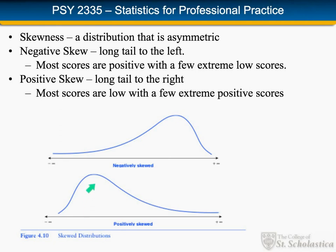A positive skew is the opposite: most scores are at the lower range with a small number of high positive scores. A negative skew is what happens when a professor gives an exam that's too easy — almost everybody gets a high score and only a very small number get a low score. Conversely, a positive skew occurs when an exam is much harder than expected, so most of the class gets a low score except for a small number with high scores. Income is another example: most people have low to moderate incomes, with only a few extreme values in the Bill Gates range.